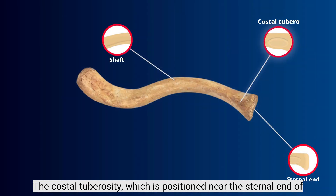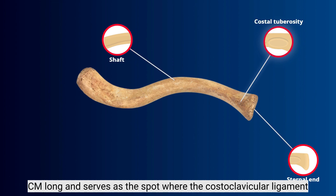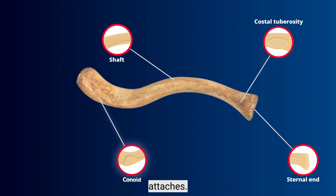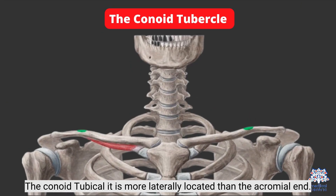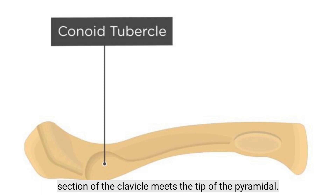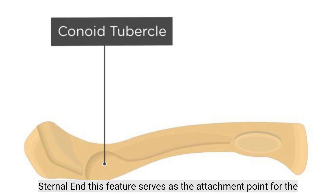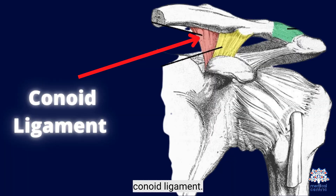The costal tuberosity, positioned near the sternal end of the bone, is identified by a large rough surface more than two centimeters long and serves as the attachment point for the costoclavicular ligament. The conoid tubercle is more laterally located, a rough prominence where the flat section of the clavicle meets the proximal sternal end, serving as the attachment point for the conoid ligament.